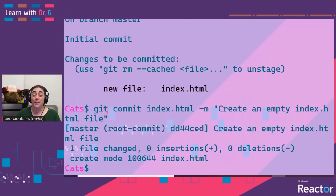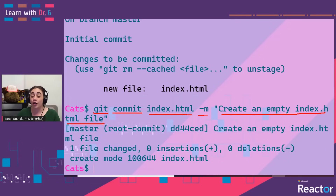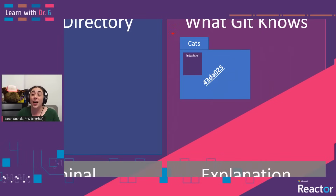We can go ahead and commit those files using a git commit command. Basically, we say git commit as the command, we specify a file — in this case index.html — and then we also specify a message. This commit message, 'create an empty index.html file', will help us know what version of our repository that commit is representing. Good commit messages are crucial to not only collaboration, but also remembering what steps you have taken to build your own coding project. After this command is finished, git knows about this folder called cats, and it's assigned a hash to that version of that entire repository.